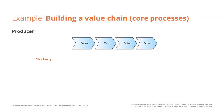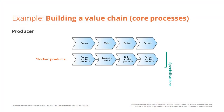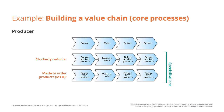For example, this typical value chain for a producer can be specialised into three value chains. One for stock orders, where we source the stocked products, make to stock, deliver stocked products, and service stocked products. A second one for MTO products — make to order products — which are custom-made orders of typically low volume, made up of four core processes: source MTO products, make to order, deliver MTO products, and service MTO products.